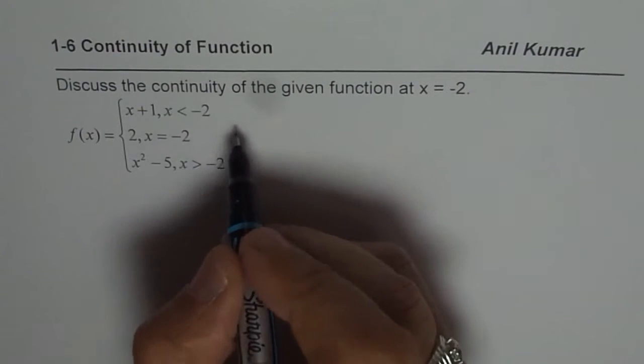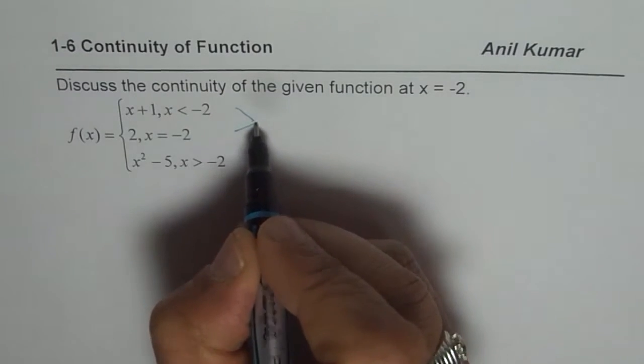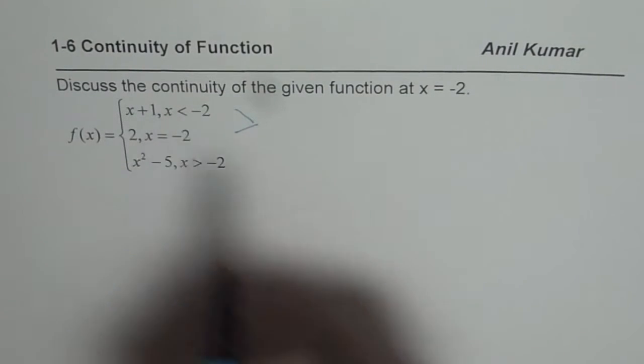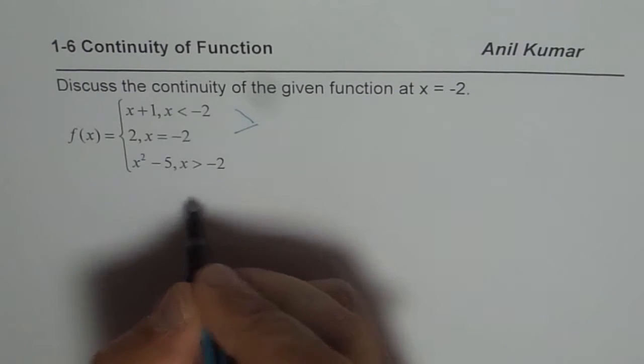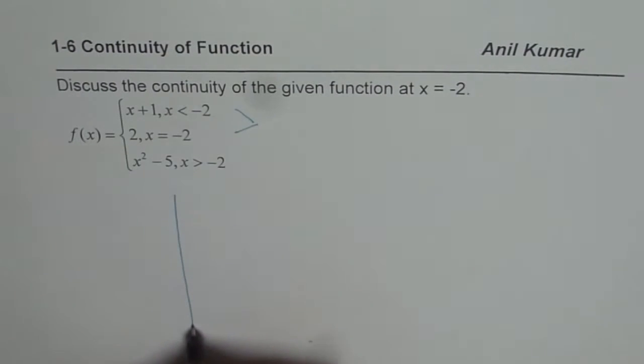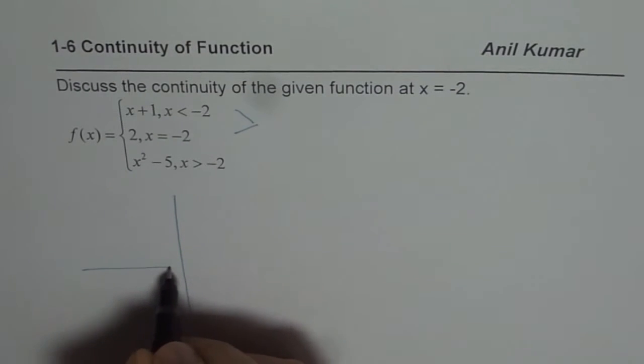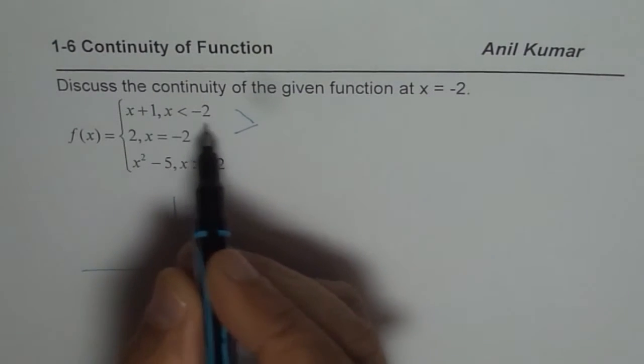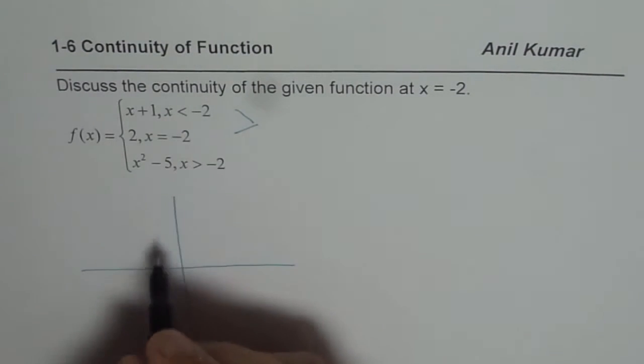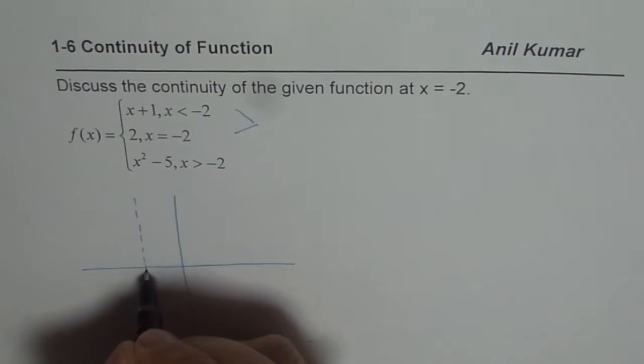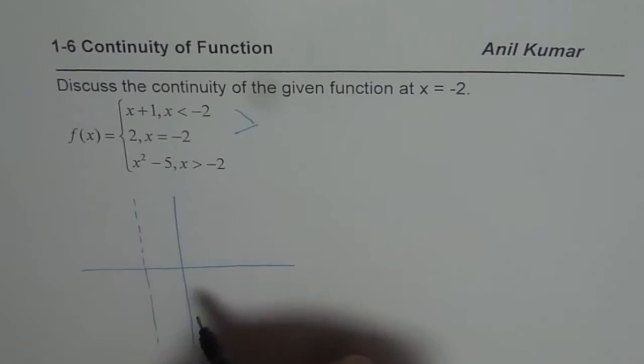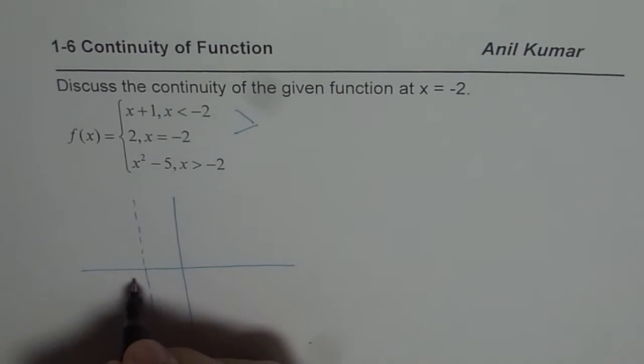So first let us consider these two points. Let me also sketch simultaneously while we are discussing so that you understand what we are trying to do. So we will plot the graph as we move along. So minus 2, let us say that this is the line which represents somewhere minus 2. So we have minus 2 at this point.